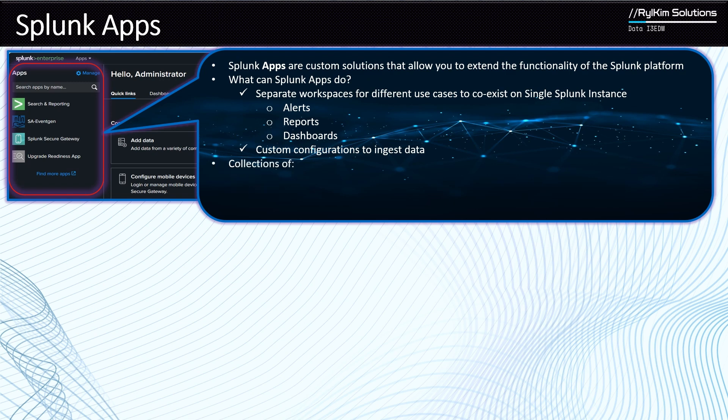Now, what are the contents of apps? Apps are typically made up of three types of things. The first is data inputs — if you have an app or add-on that is primarily there to ingest data, it's obviously going to have data inputs. The second type is UI elements. Think about Splunk Enterprise Security — it is itself an app. You need an instance of Splunk and then you install Enterprise Security as an app on it. All the dashboards, such as the Incident Review dashboard, are UI elements that come with that app. The third type is knowledge objects.